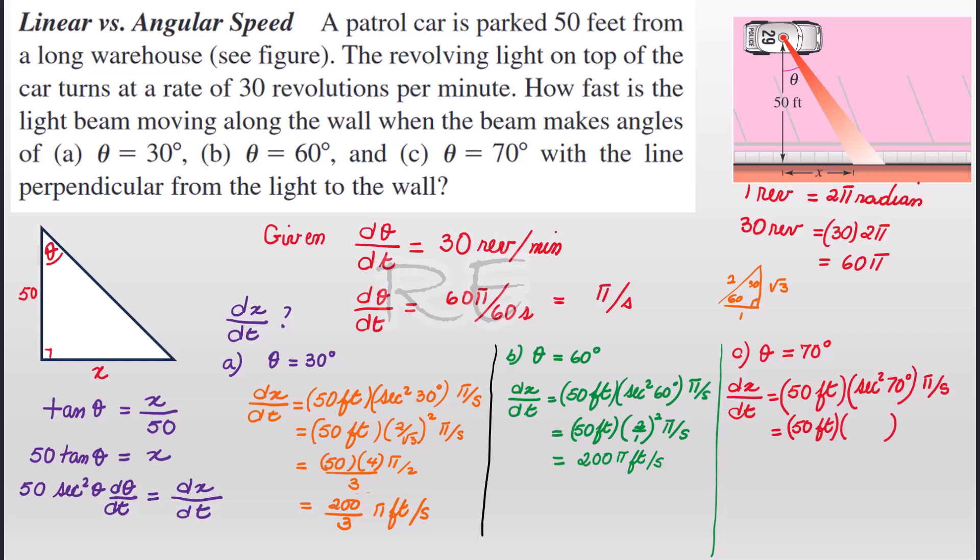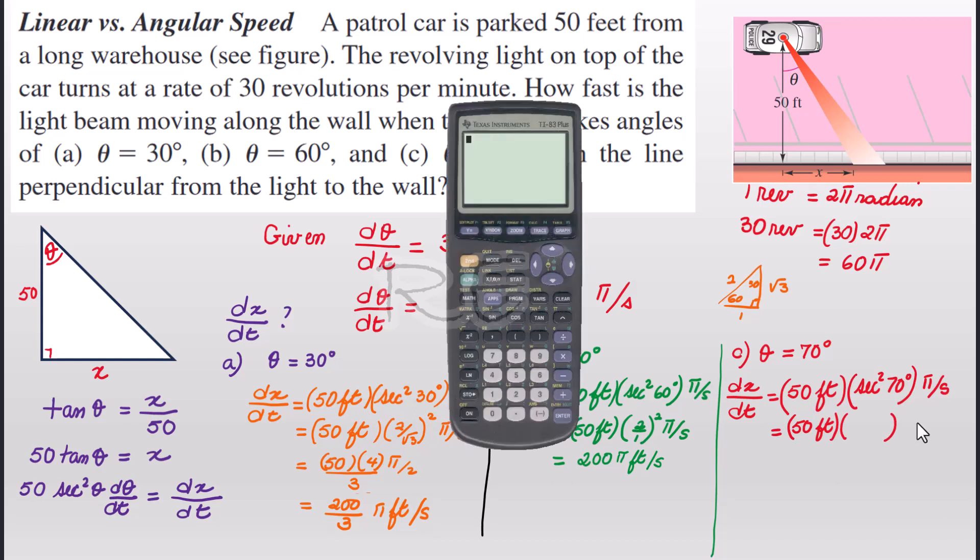We need to make sure that the calculator is in degree mode. I'll just put the calculator in degree mode. And secant is one over cosine. It's going to be 1 over cos 70 degrees, which is about 2.92. We square it is 8.55 approximately.